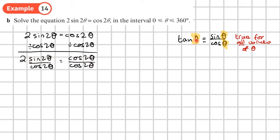Sine over cos 2 theta becomes tan 2 theta, because you've got 2 theta there and 2 theta there, it's true for all values, so that's going to become tan 2 theta. So I'll have 2 lots of tan 2 theta is equal to 1.